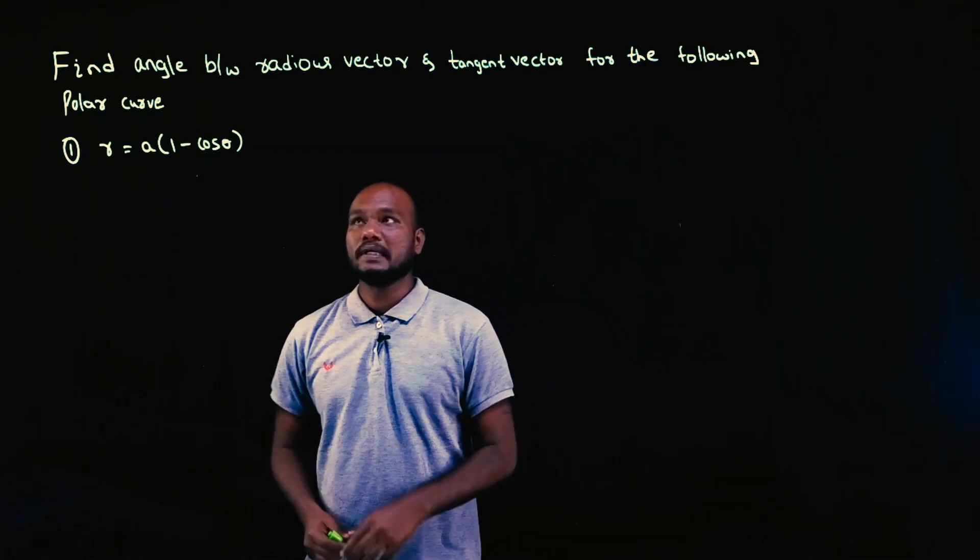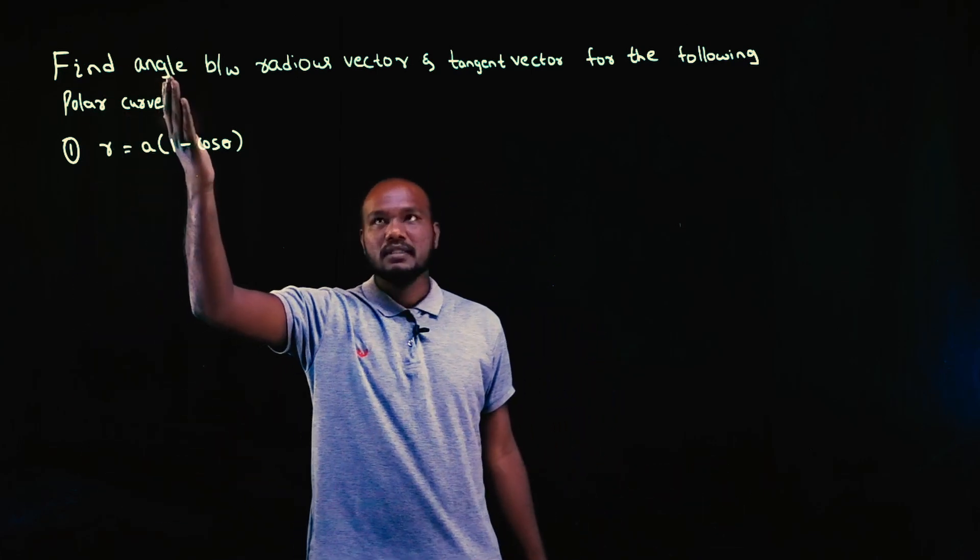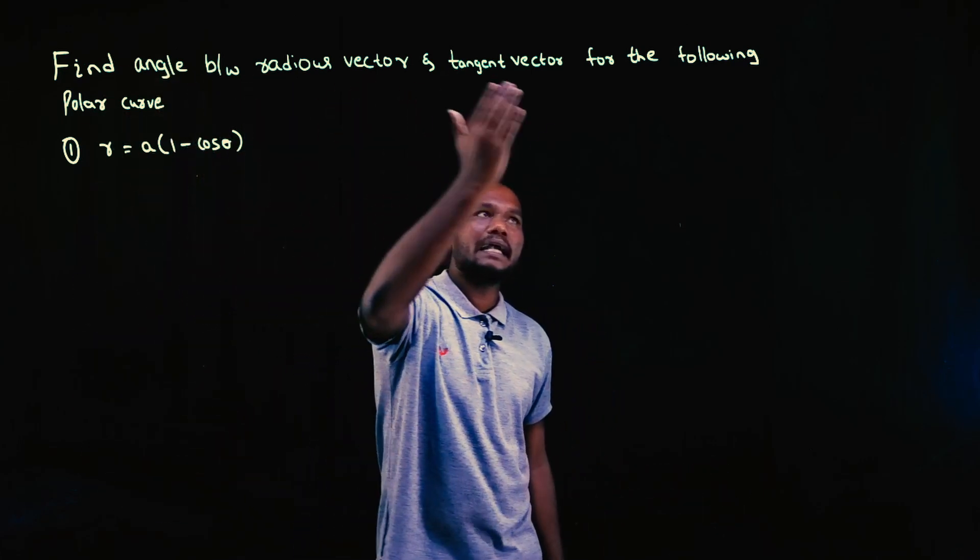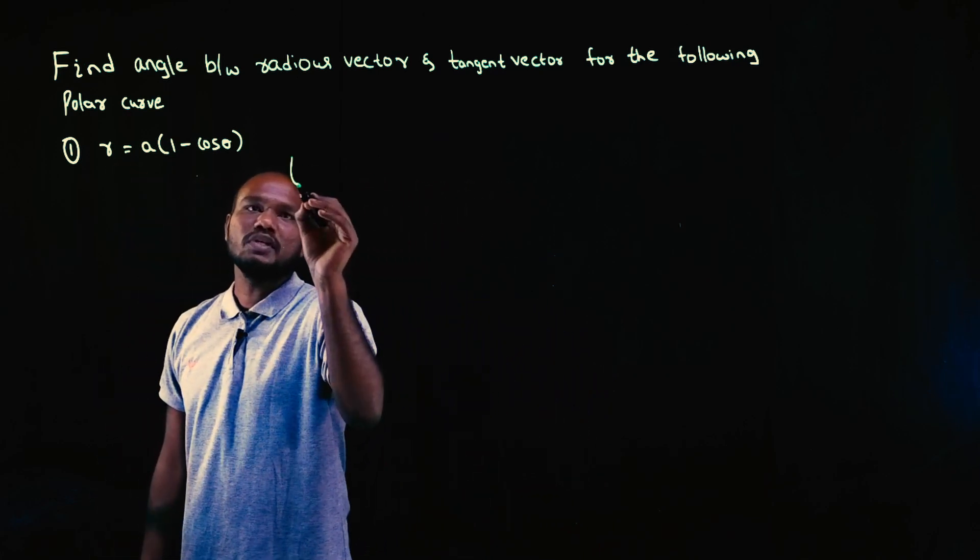Okay, let's start first question on angle between radius vector and tangent vector. The question is very simple. We have to find the angle between radius vector and tangent vector for the polar curve. The curve is given. The first thing you need to do is to know the formula.